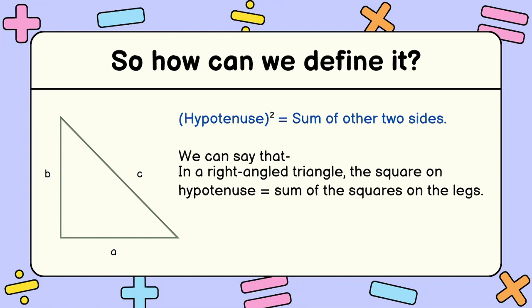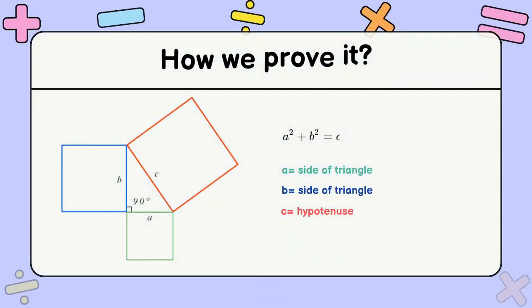So we can say that in a right-angled triangle, the square on hypotenuse is equal to the sum of the squares on the legs. So if we take the squares on the legs, which is a and b, and if we add them, we get the square of c. So I'm going to be showing you squares in a second.